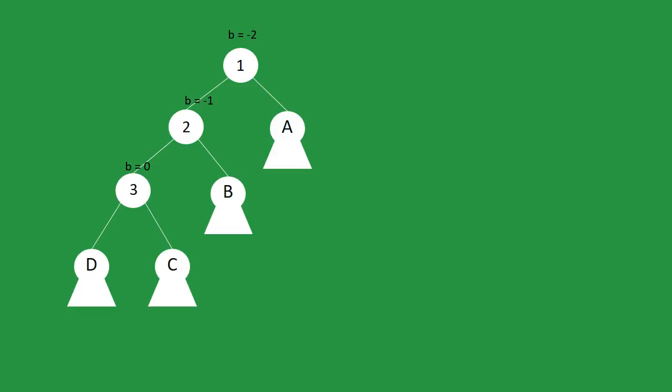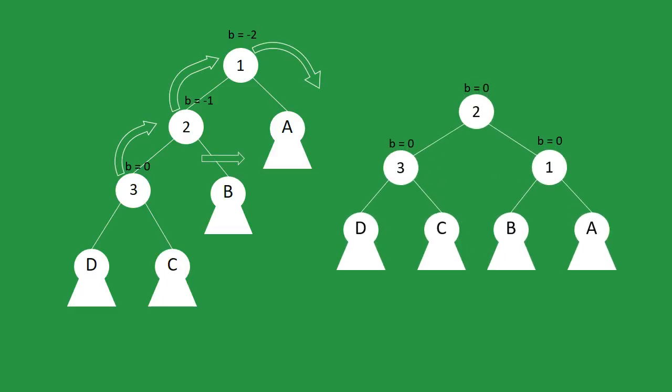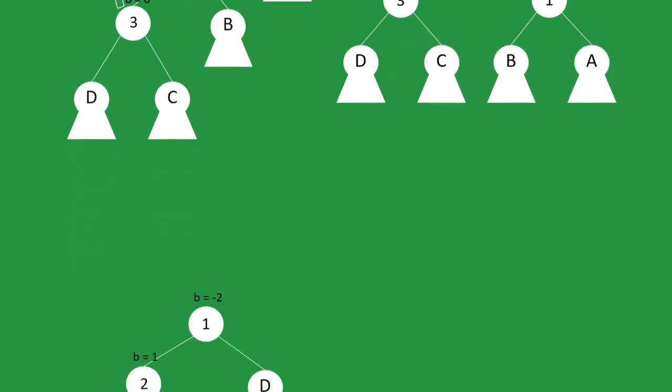Every other subtree stays the same. Pretty much the same happens with right rotation. Only now we are talking about the right child of 2, and we will set it as the left child of 1.